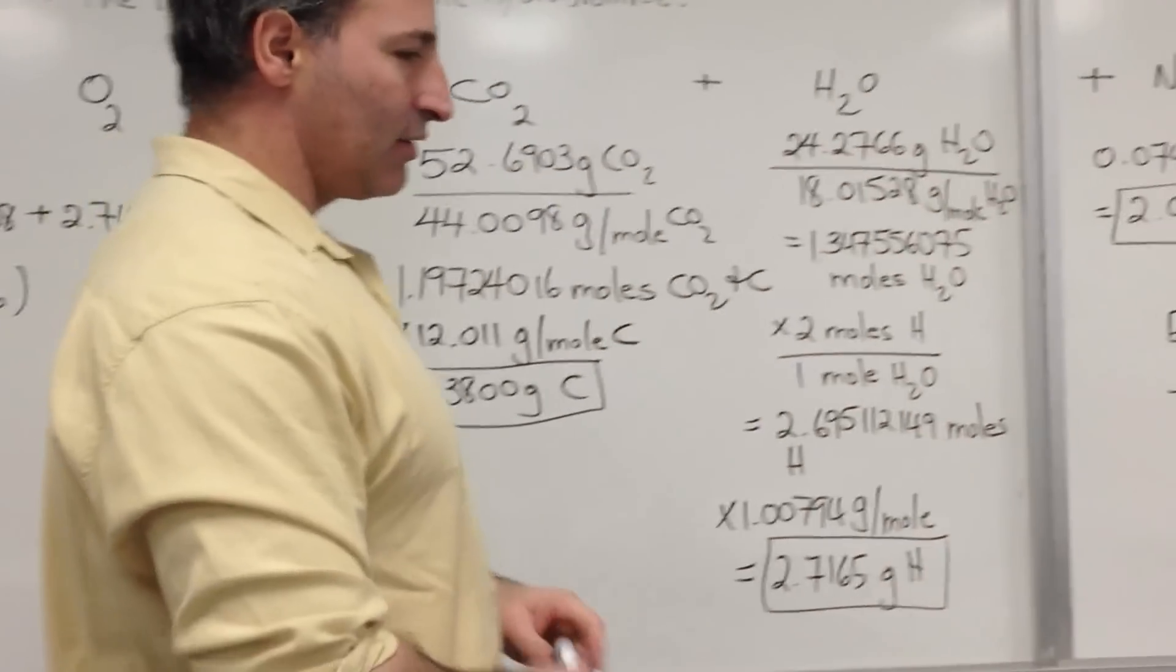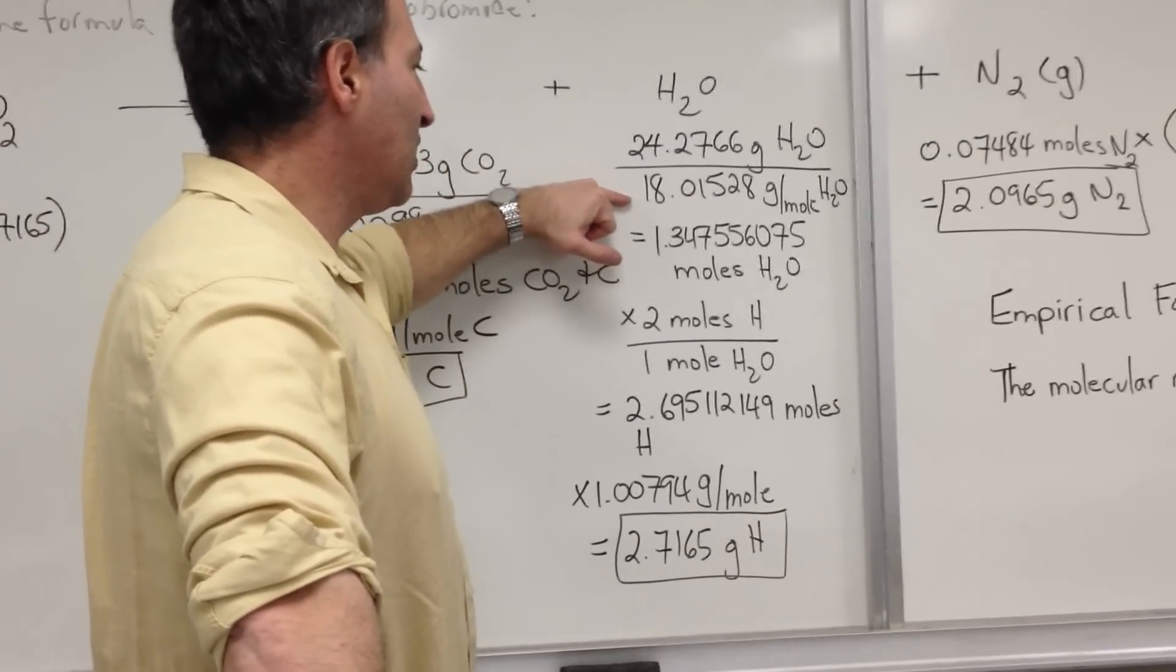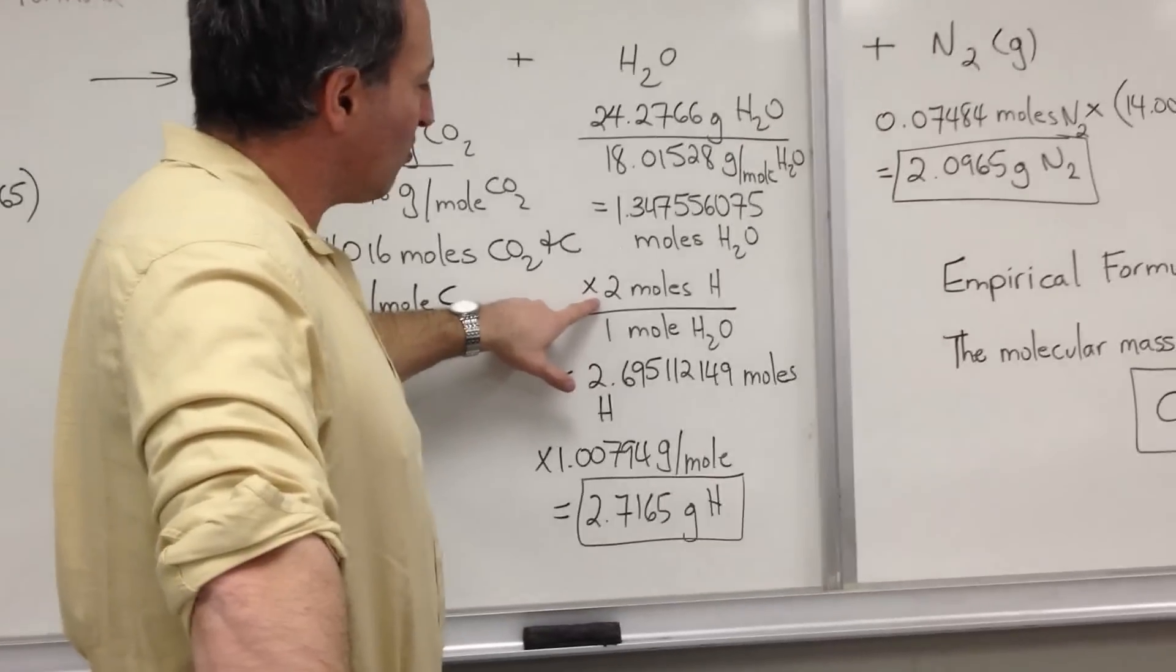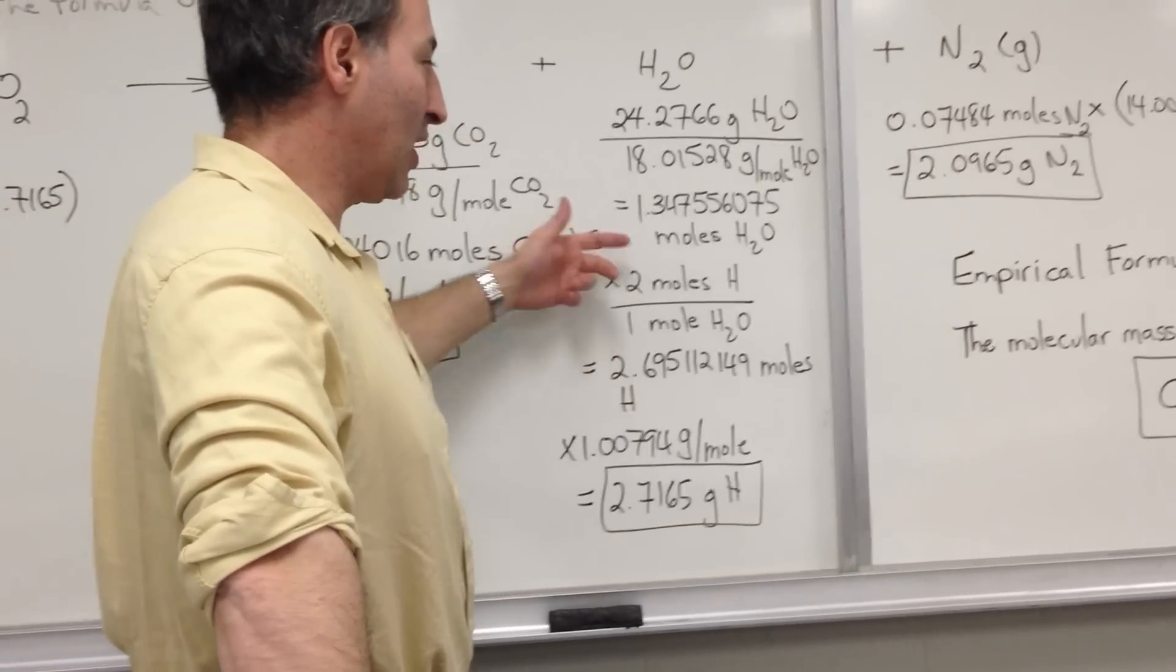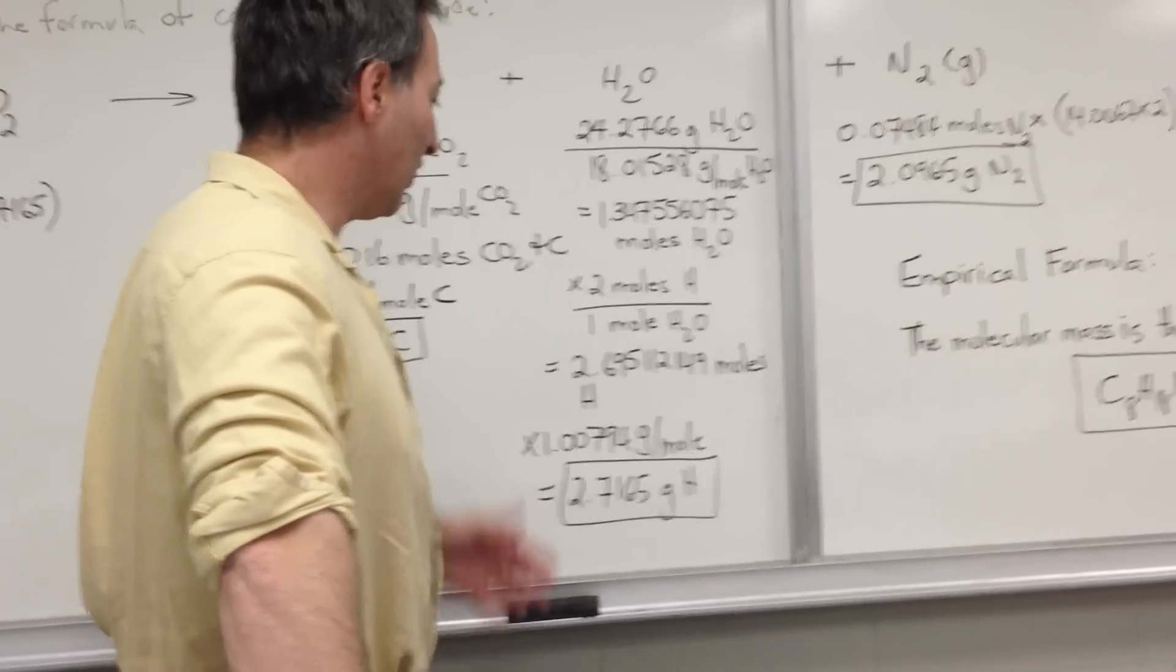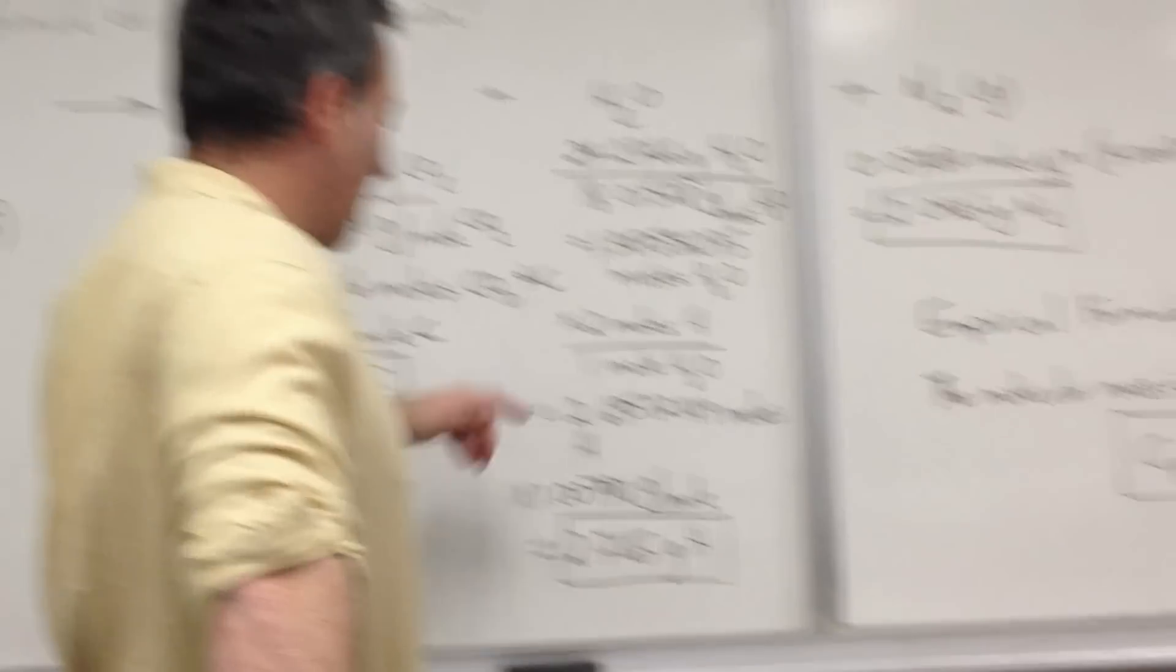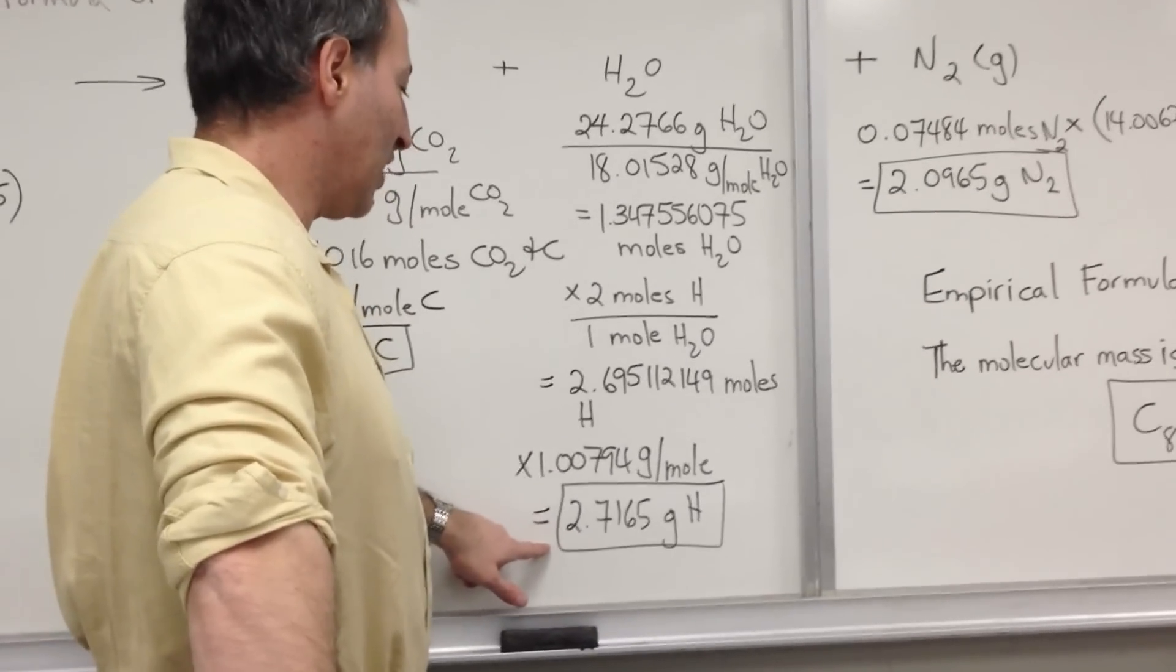Same idea for water. 24 grams of water are produced. The molar mass of water is 18. That gives us 1.34 moles of water. Now we've multiplied by 2 moles of hydrogen for every 1 mole of water, because the stoichiometry of hydrogen to H2O is 2 to 1. So there are 2.695 moles of hydrogen in that sample, which translates to 2.7165 grams of hydrogen.